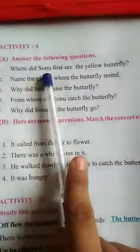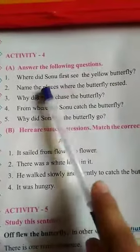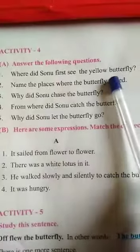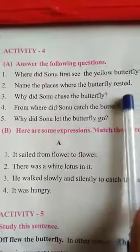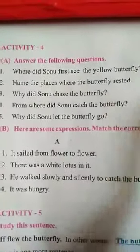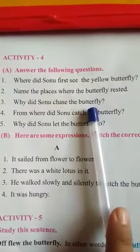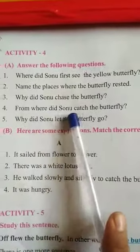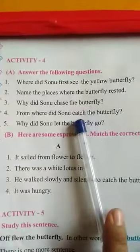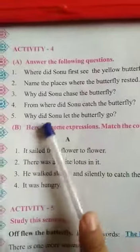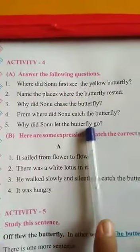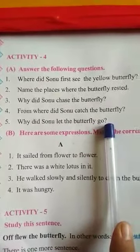Now students, let's do Activity 4 — Answer the following questions. 1. Where did Sonu first see the yellow butterfly? Sonu first saw the yellow butterfly in the garden. 2. Name the places where the butterfly rested. The places where the butterfly rested: 1. Red rose, 2. Floating leaves in the pond, 3. Chumpak tree. 3. Why did Sonu catch the butterfly? Sonu caught the butterfly because he found it very pretty. 4. From where did Sonu catch the butterfly? Sonu caught the butterfly from the spider's web. 5. Why did Sonu let the butterfly go? Sonu let the butterfly go because he wanted it to be happy.